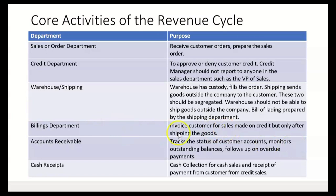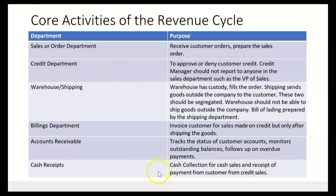Then we have the billings department, whose job it is to invoice the customer for sales made on credit so the company can get paid — but only after shipping the goods. The billings department needs to know that the goods have been shipped, so they'll need a copy of the bill of lading. Then accounts receivable tracks the status of customer accounts, monitors outstanding balances, and follows up on overdue payments.